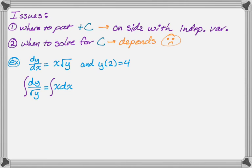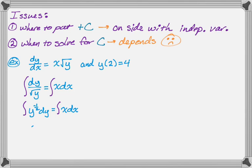With radicals, it's easier to convert to rational exponents — if they're in the denominator, use negative exponents. So rewrite as the integral of y to the negative 1/2 dy equals the integral of x dx. On the left, applying the power rule: add 1 to −1/2 gives 1/2, and the reciprocal is 2, so we get 2y to the 1/2. On the right, the integral of x is 1/2 x squared.